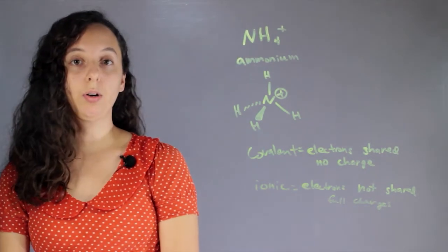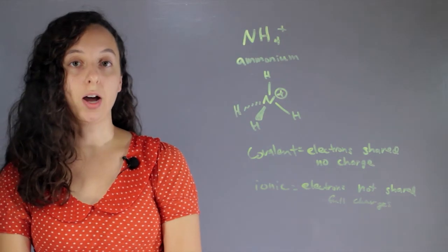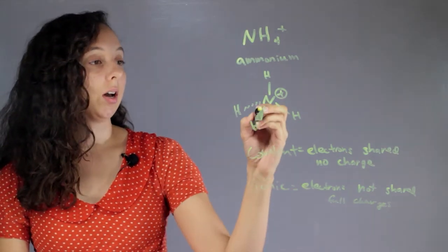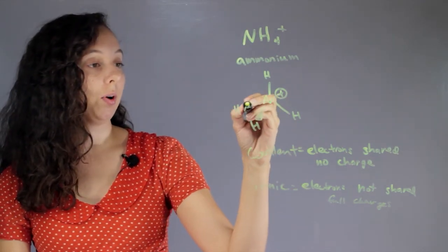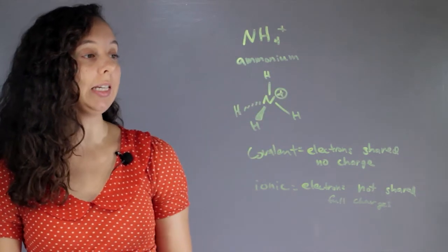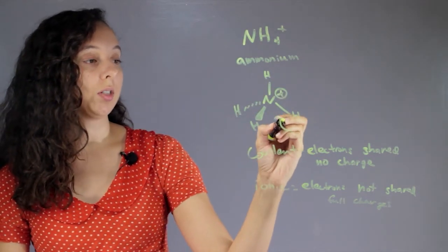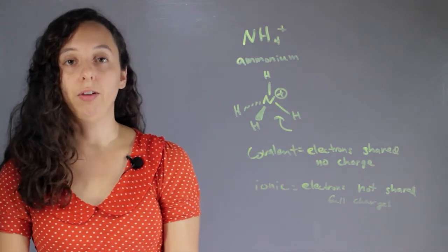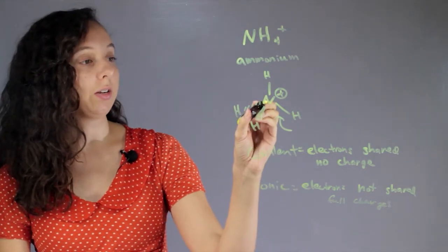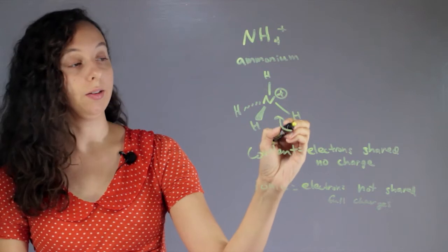So with ammonium, we have both types of bonds. We have straight covalent bonds with all of the nitrogens to hydrogens because we can see this is just a bond. It's not special, it's not doing anything. It's a covalent bond. So this nitrogen and this hydrogen are completely sharing these electrons.